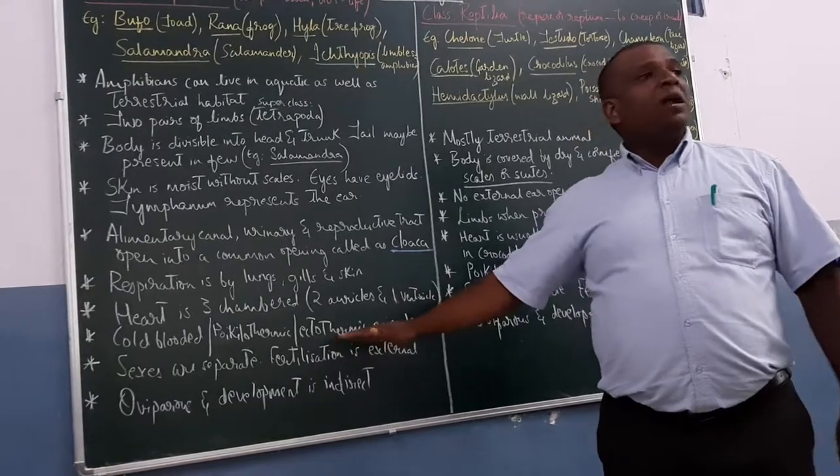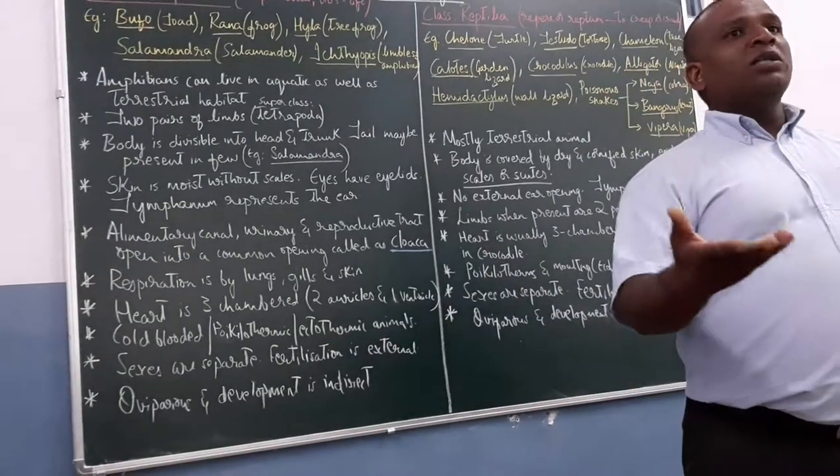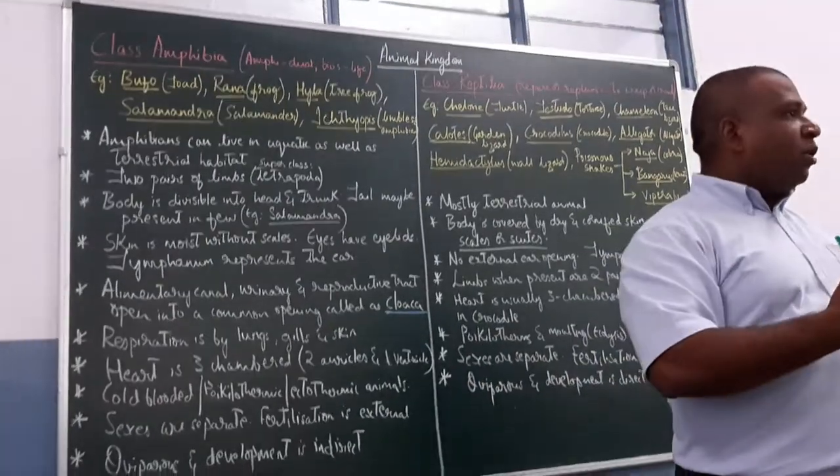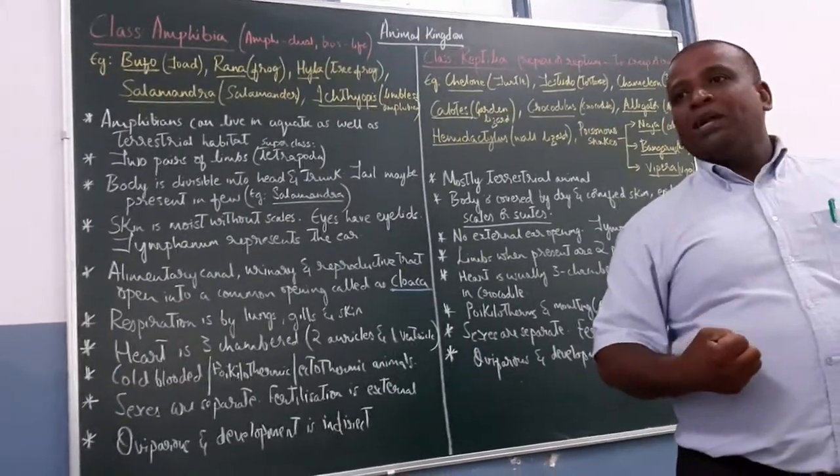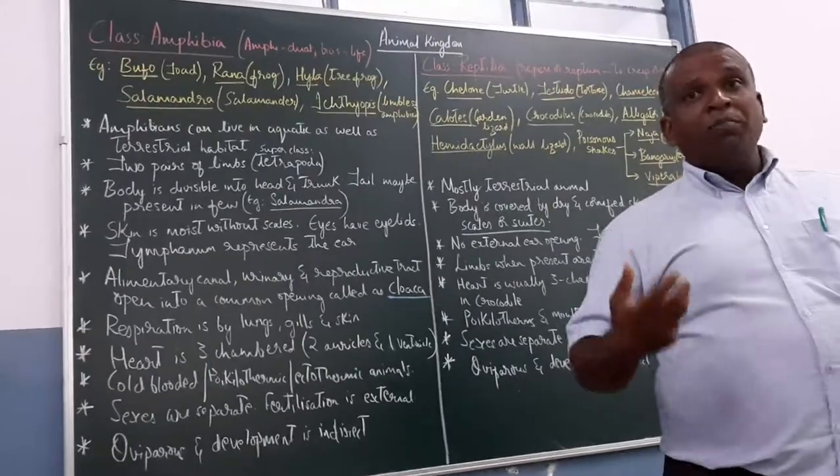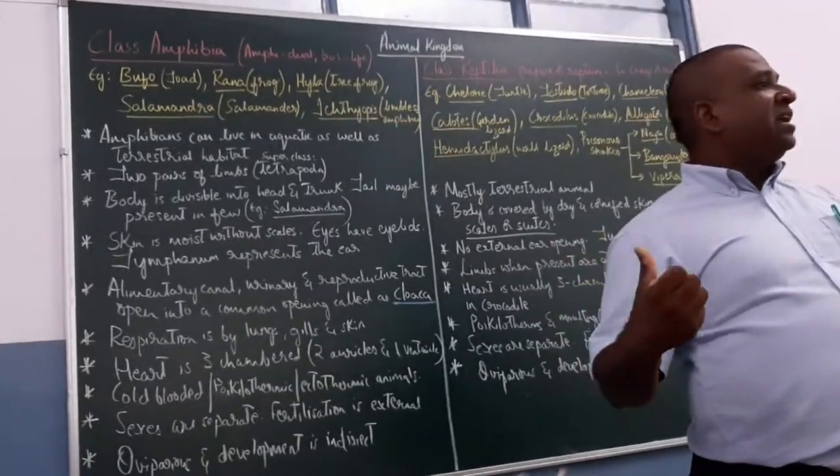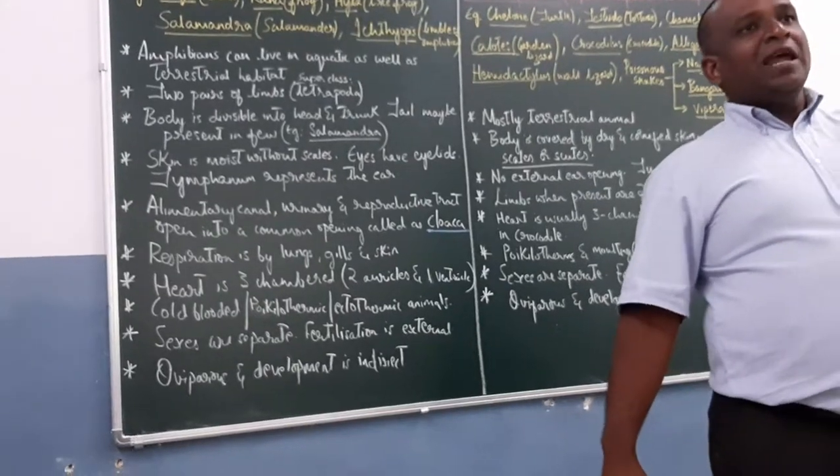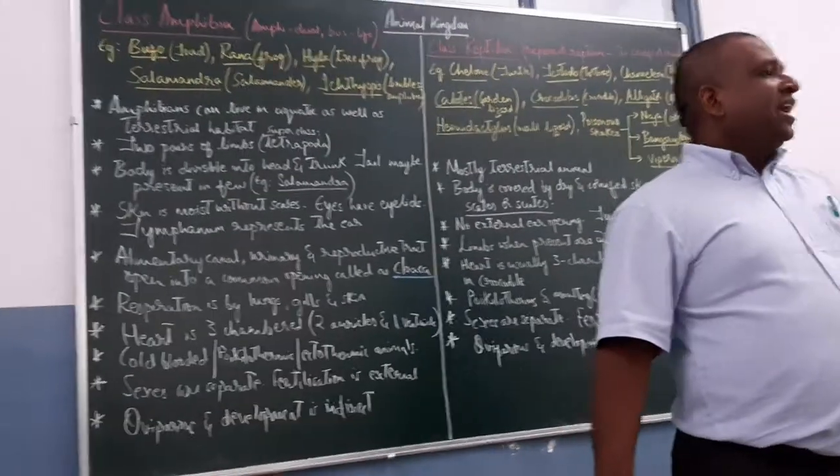They are cold-blooded or poikilothermic animals. Or they also call it as ectothermic animals. They don't have a constant body temperature. We have a constant body temperature. So we are warm-blooded animals. But in case of amphibians, reptiles, they are cold-blooded animals. Their temperatures are dependent upon external surroundings.